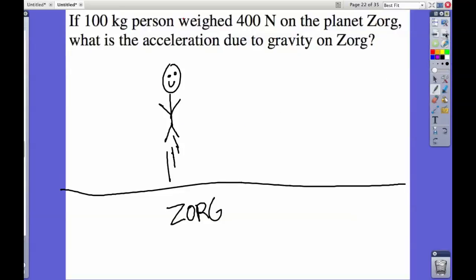We have a 100-kilogram person who weighs 400 newtons on planet Zorg. What is the acceleration due to gravity on Zorg? We plug in the numbers: F_w equals m times g. The force of weight is how heavy you are. So I'm going to put in 100 kilograms for my force of weight.